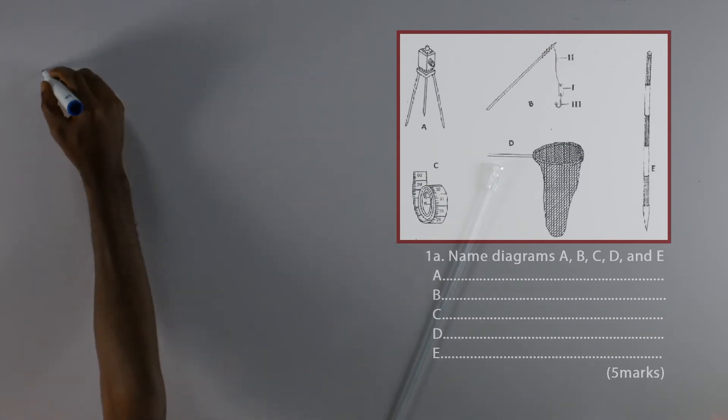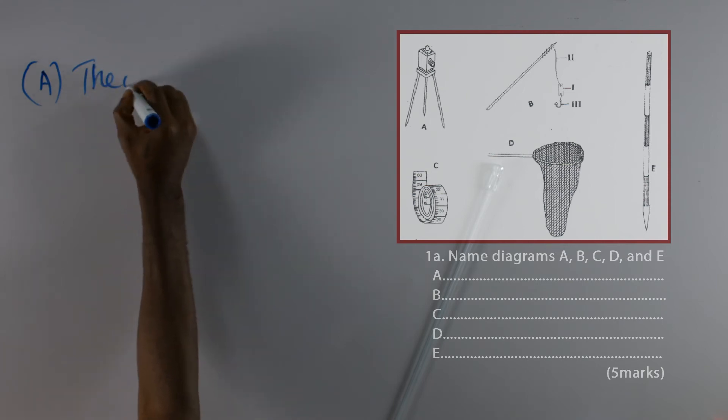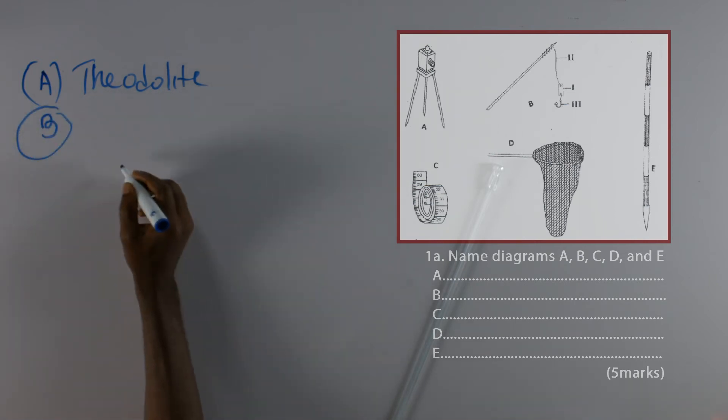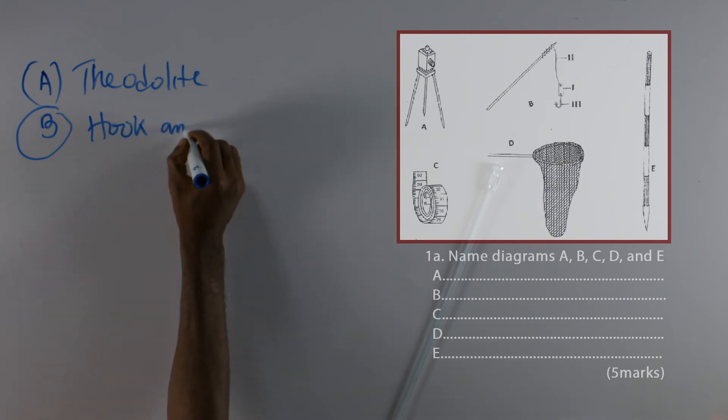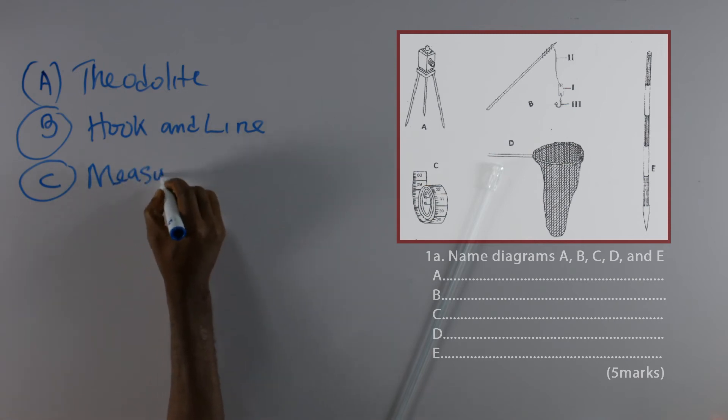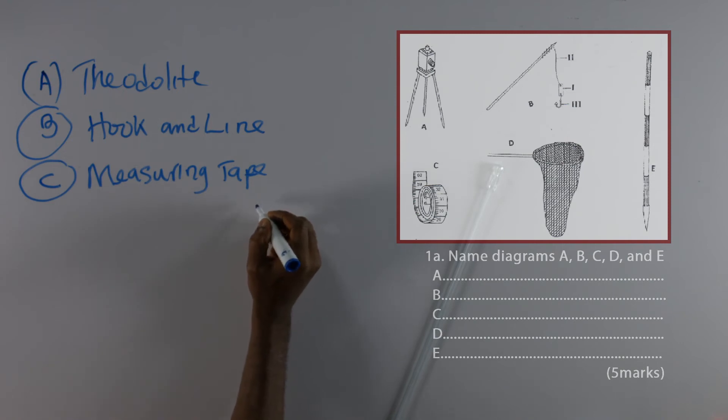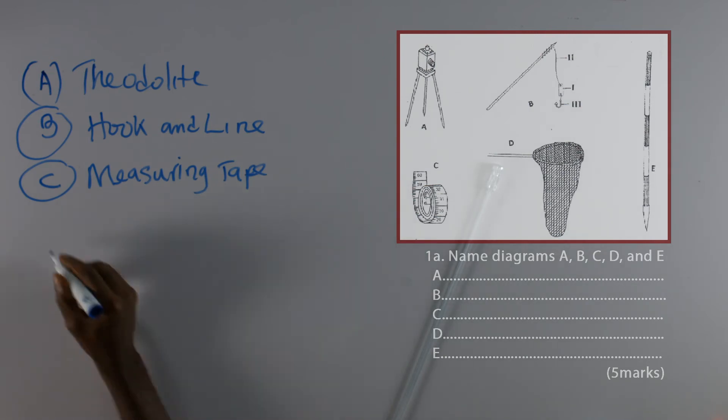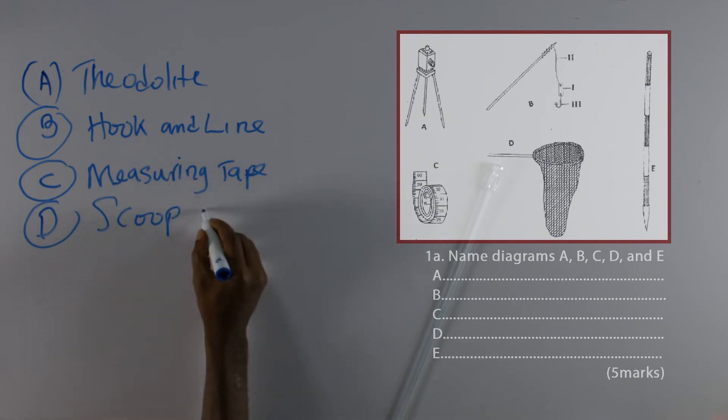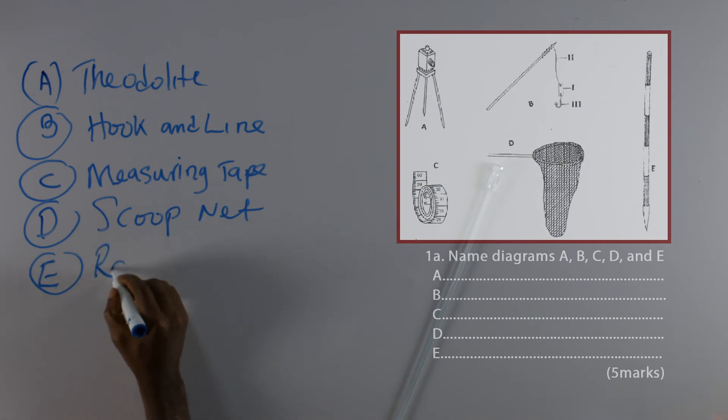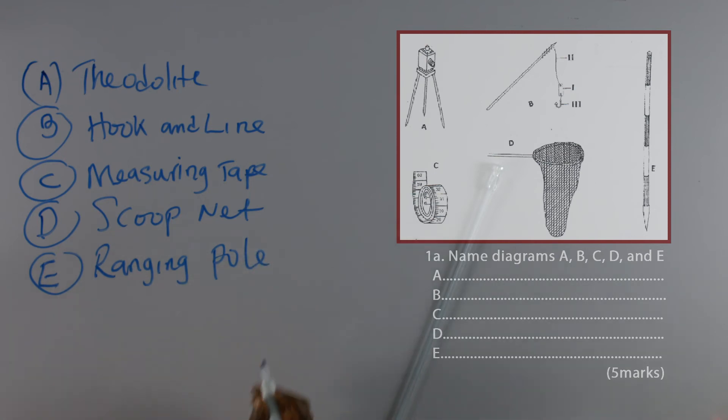The first one that we have as A there is what we call the theodolite. B, what we have there is hook and line. And what we have as C is measuring tape. Some people call it tape measure, but I think the most common name is measuring tape. Then D, what we have there is the scoop net. And we have for question number E what is called ranging pole.